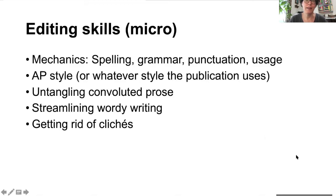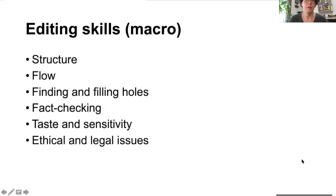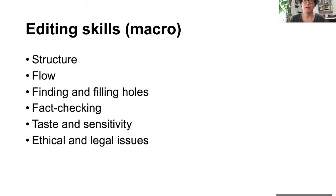Particularly in news and professional writing, you need to look at structure and flow. Structure basically means: have we put the most important stuff first? Flow means does each idea flow smoothly from the next? Are they using transitions? Are quotes that are used set up? Does it make a logical progression from the most important thing through the information you've got so it feels like a coherent whole?